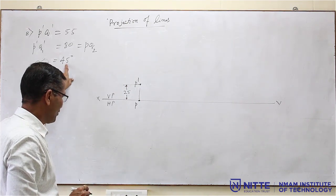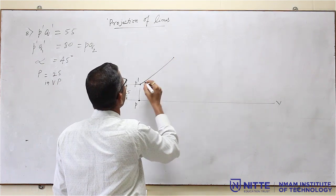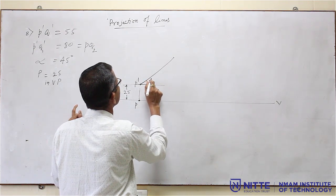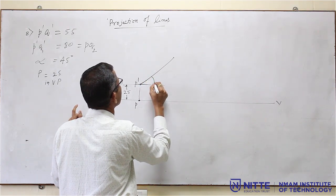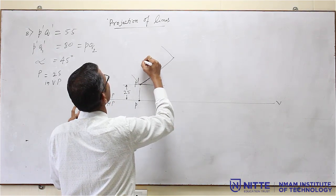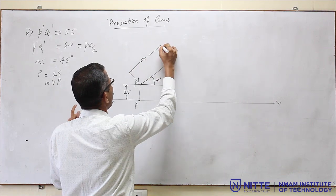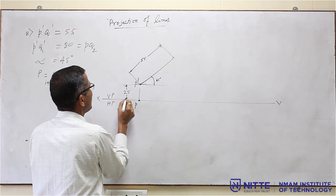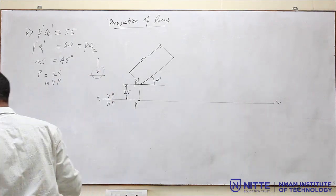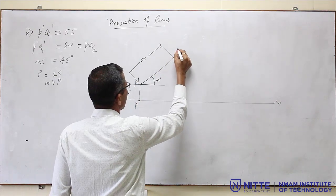Alpha is the inclination of the front view, and the front view length P dash Q dash is given. From P dash, draw a line of length 55mm at an angle of 45 degrees. Ensure the arrowhead touches the XY line as well as this line. Do not simply draw the arrowhead loosely. This becomes Q dash in the front view. Now draw the locus of Q.